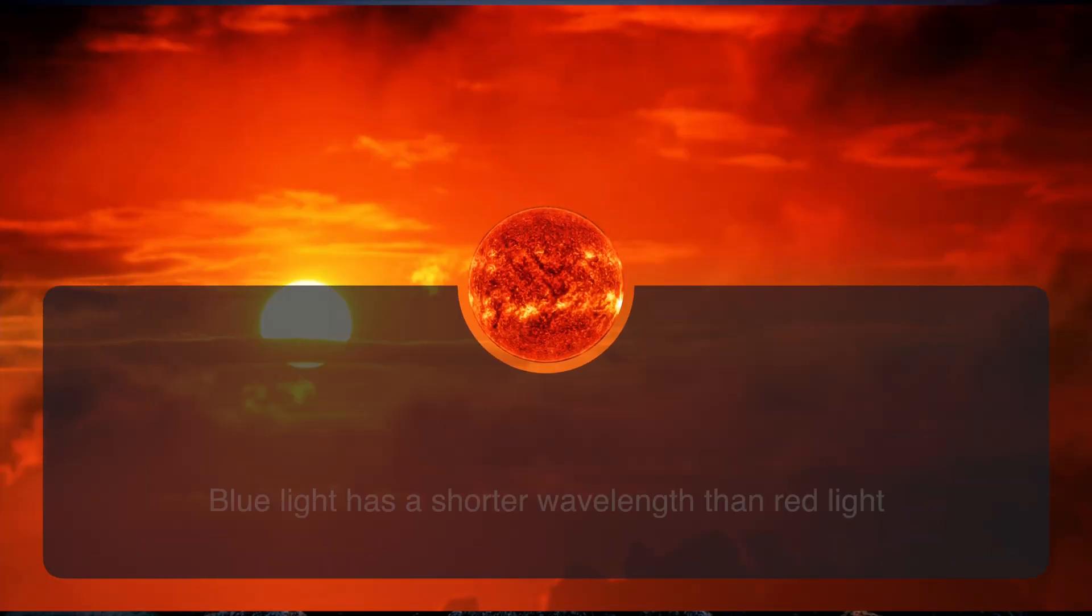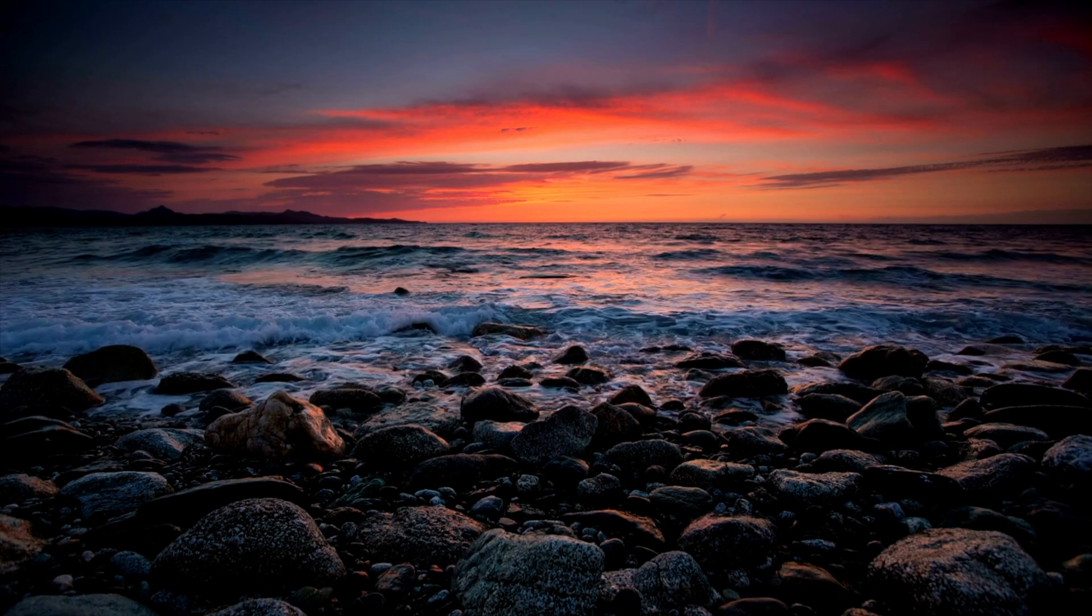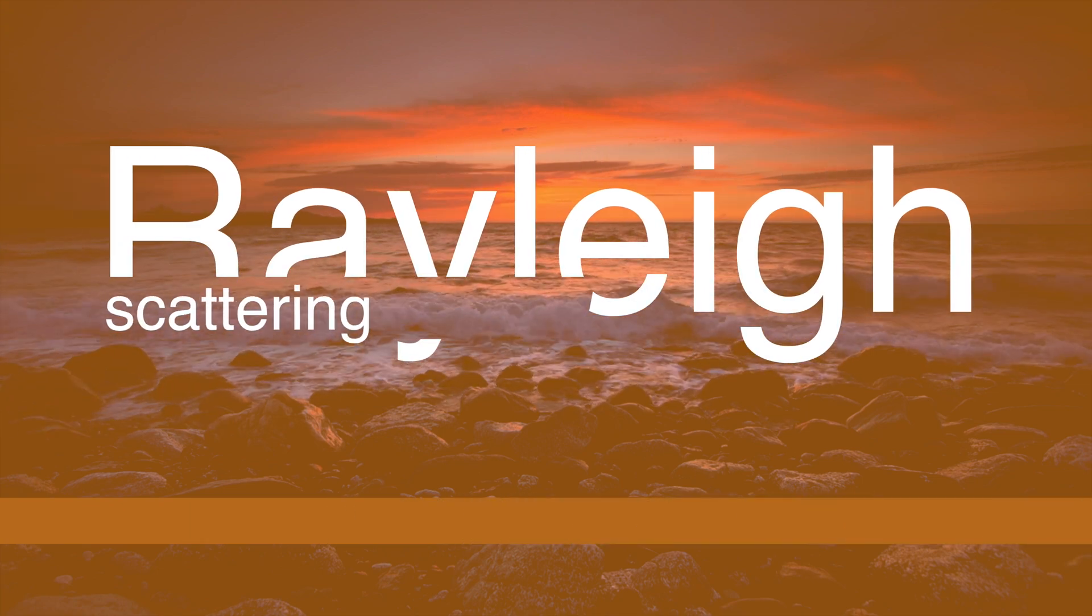Blue light has a shorter wavelength than red light and is therefore more scattered, causing it to spread in all directions in the atmosphere. This effect is called Rayleigh scattering and is also responsible for the color of the sky.